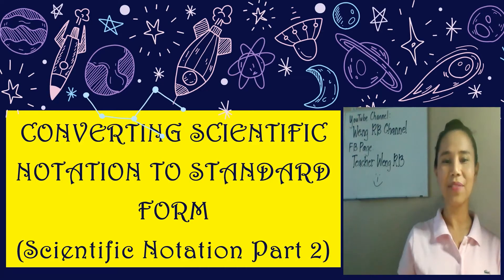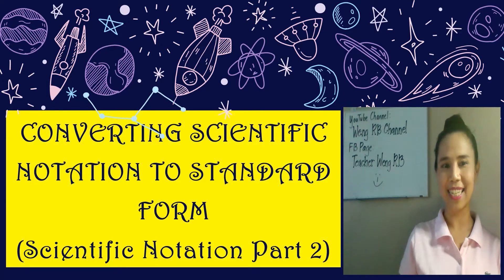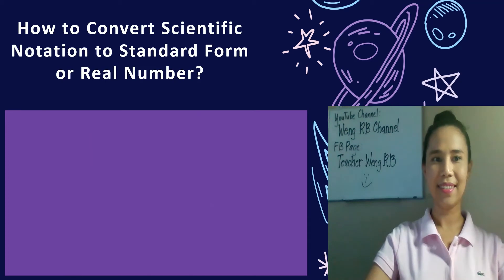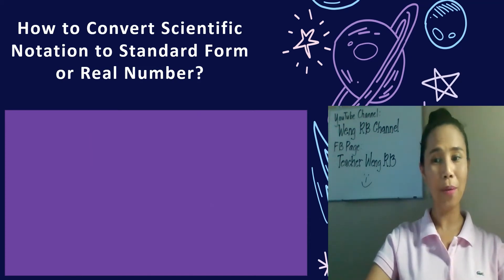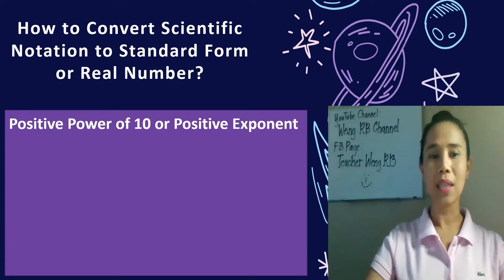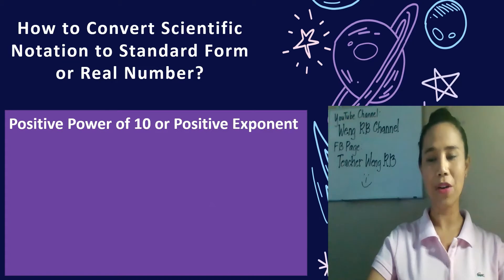Today's lesson is converting scientific notation to standard form. This is the second part of our scientific notation lesson. So how do we convert scientific notation to standard form or real number? First, we have to determine if it's a positive or a negative exponent. So let's deal first with the positive exponent or the positive power of 10.